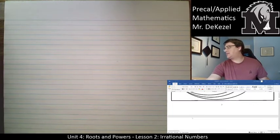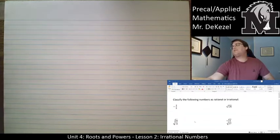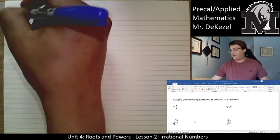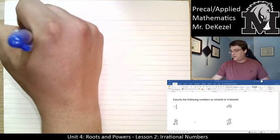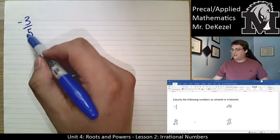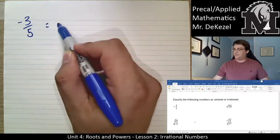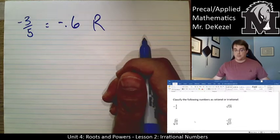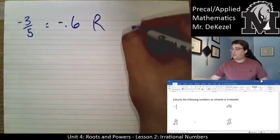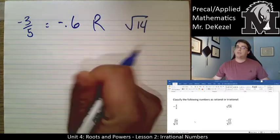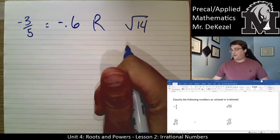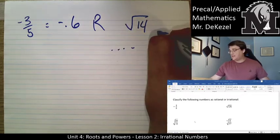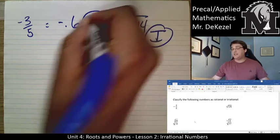Now let's classify the following numbers as rational or irrational. We have negative three-fifths — I know that is a decimal, it equals negative 0.6, so that is a rational number. The square root of 14 — if you punch that into your calculator you get a whole bunch of non-repeating decimals, so that one is irrational.